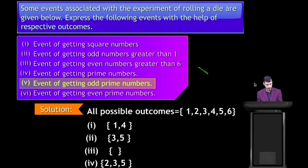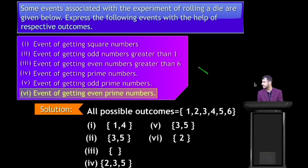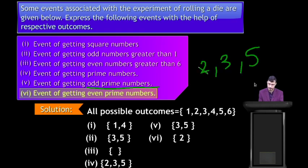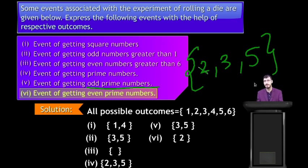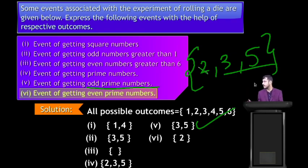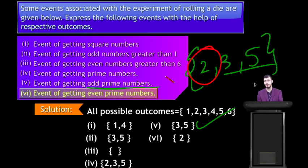Event of getting odd prime numbers: prime numbers are 2, 3 and 5 — but 2 is not an odd number, so the answer is 3 and 5. Event of getting even prime numbers: 2 is the only even prime number — so the answer is 2. Remember: 2 is the only even prime number.